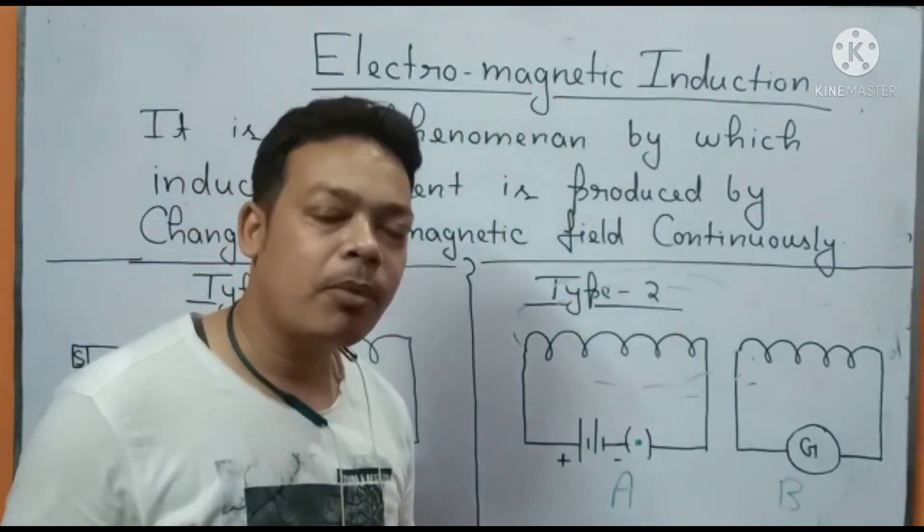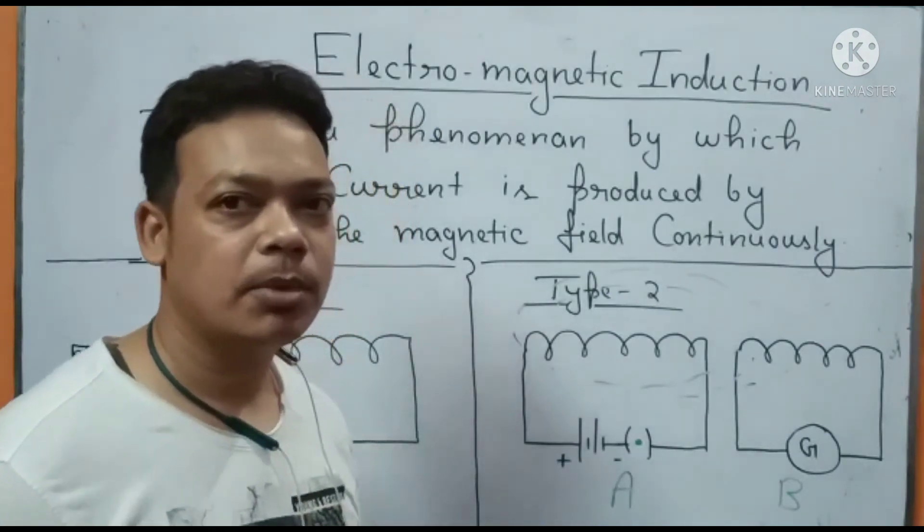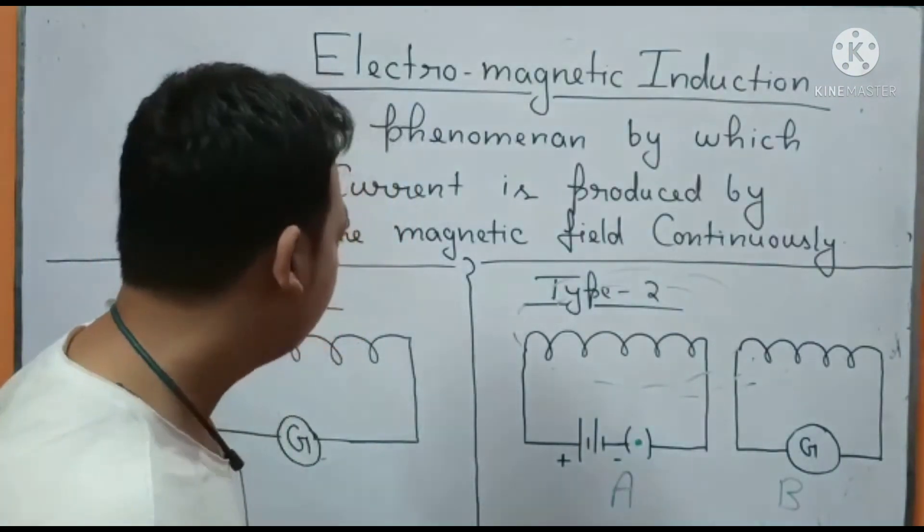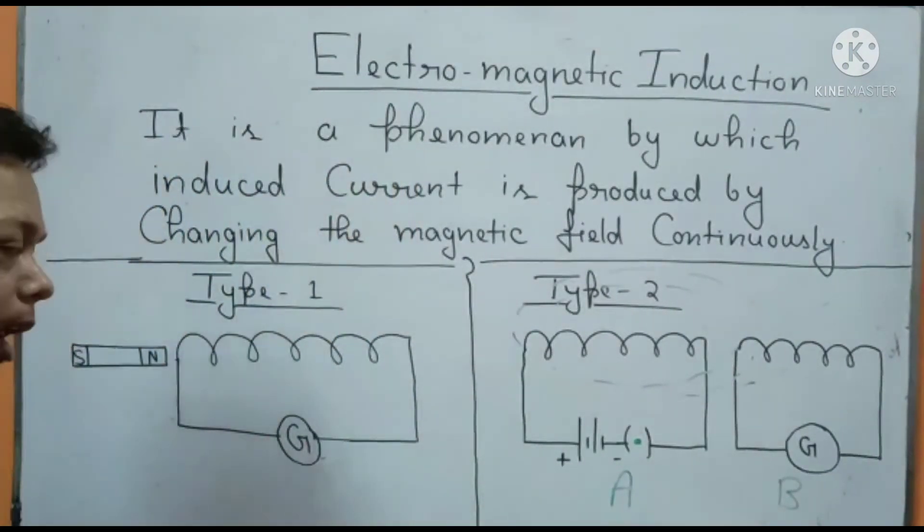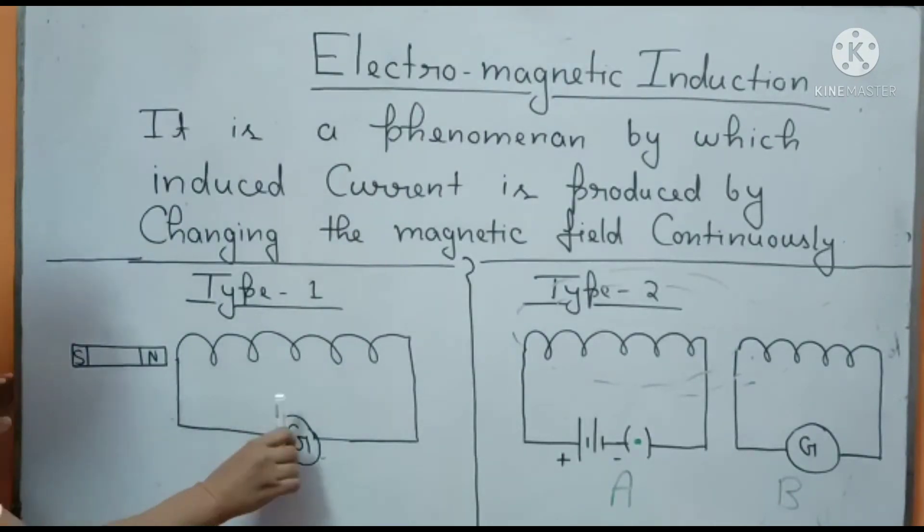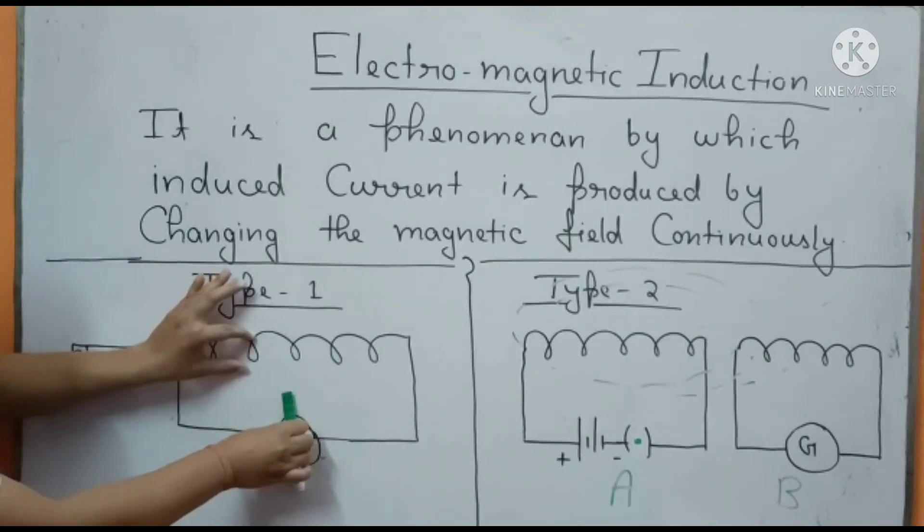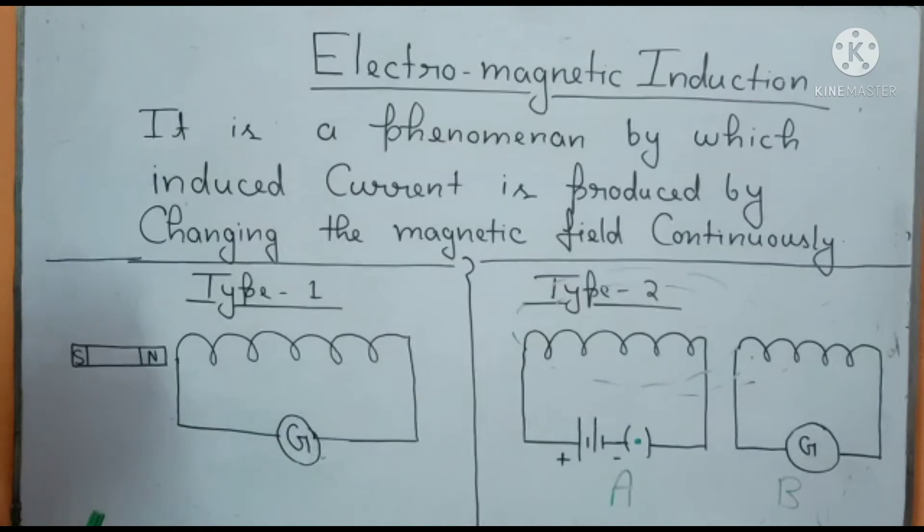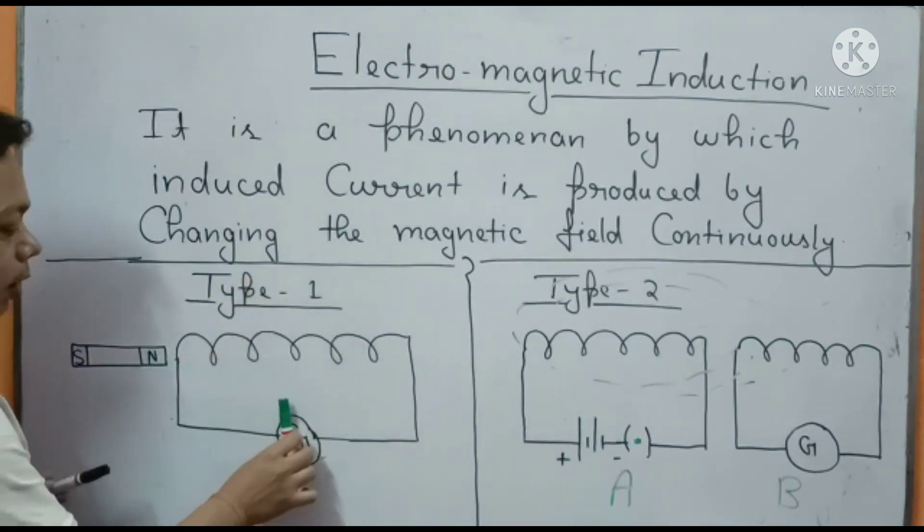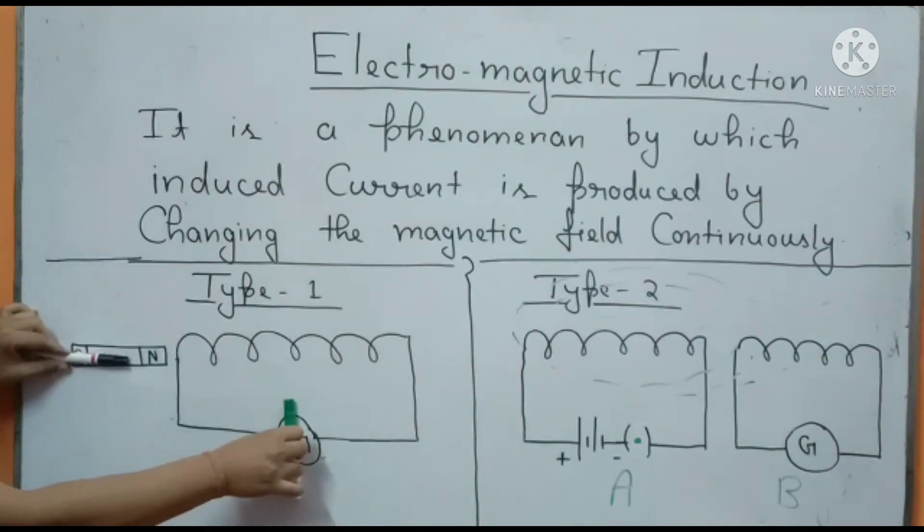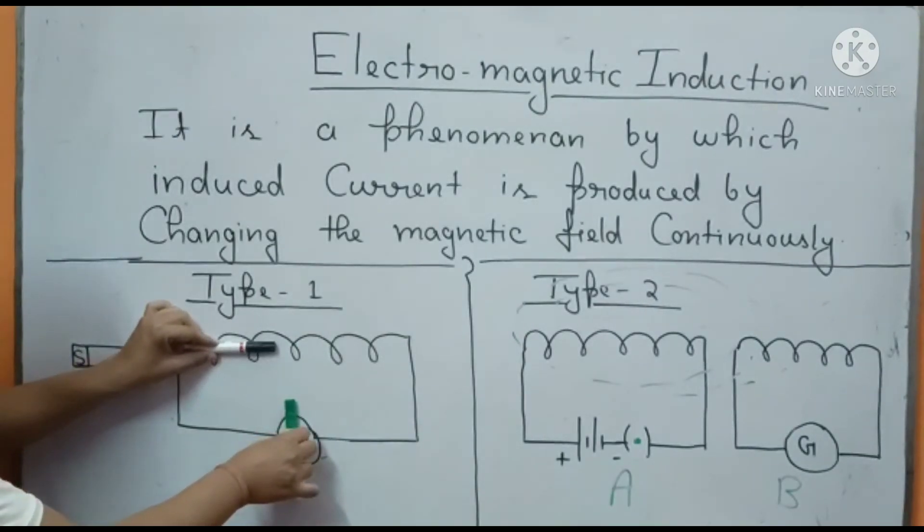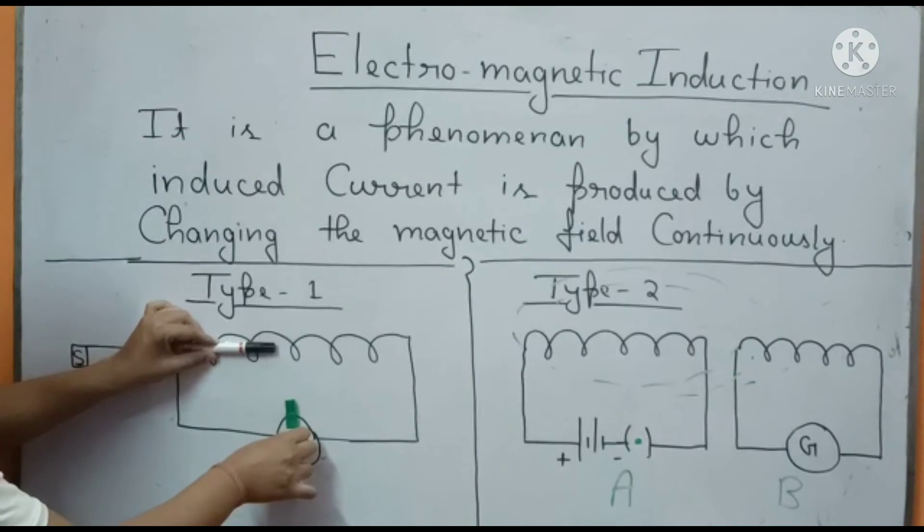Now there is a very important question from NCERT that has been asked many times in CBSE board exams. The question is: what will happen to the needle of the galvanometer if a bar magnet is inserted and kept stationary into the coil? A galvanometer was connected to the coil, and if we insert the bar magnet and leave it inside the coil...